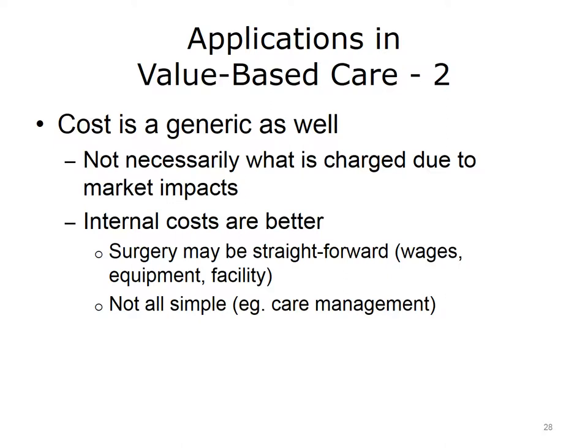Cost is generic as well. The charges or bills for healthcare are not at all predictable, in part because contracts between health entities in the market — like insurers and large health systems — are complex and haven't been transparent. Some costs may be straightforward, like the time, wages, equipment, and facility costs needed to perform surgery. Bundled payments attempt to provide a single cost for an efficient surgery by summing all components and letting the surgeon and system try to provide a high-quality product under a single cost. Many costs, however, are very complex — if a patient has expensive healthcare needs we can add up those costs, but what about care management that tries to reduce those costs? Often, comparisons are used but are not performed.